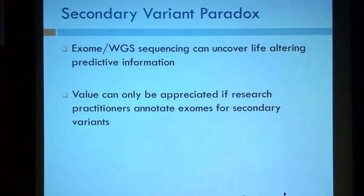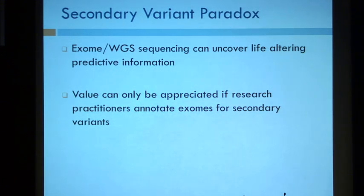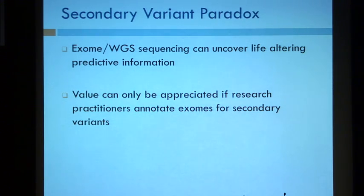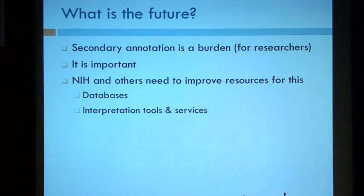The paradox here is that we're generating a ton of information and a lot of us are leaving it on computers. This information can be life-changing for our participants, but the only way they're going to change their lives based on it is if we give it back to them. That's going to take a lot of time and effort — or maybe a handful of researchers designing a great tool so we can get down to the 10 variants we need to return per individual. Secondary variant annotation is a burden and takes a lot of time, but it is important. We really need to improve the tools available.